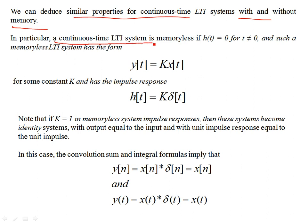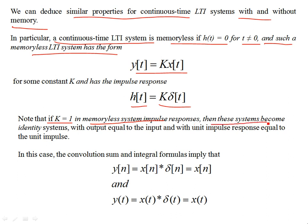We can identify similar properties for continuous-time LTI systems with and without memory. A continuous-time LTI system is memoryless if h(t) is zero for t not equal to 0, since δ(t) only exists at t=0. Such a memoryless LTI system has the form y(t) = k·x(t), and its impulse response has the form h(t) = k·δ(t), where k is a constant. If k equals one, such systems become identity systems.